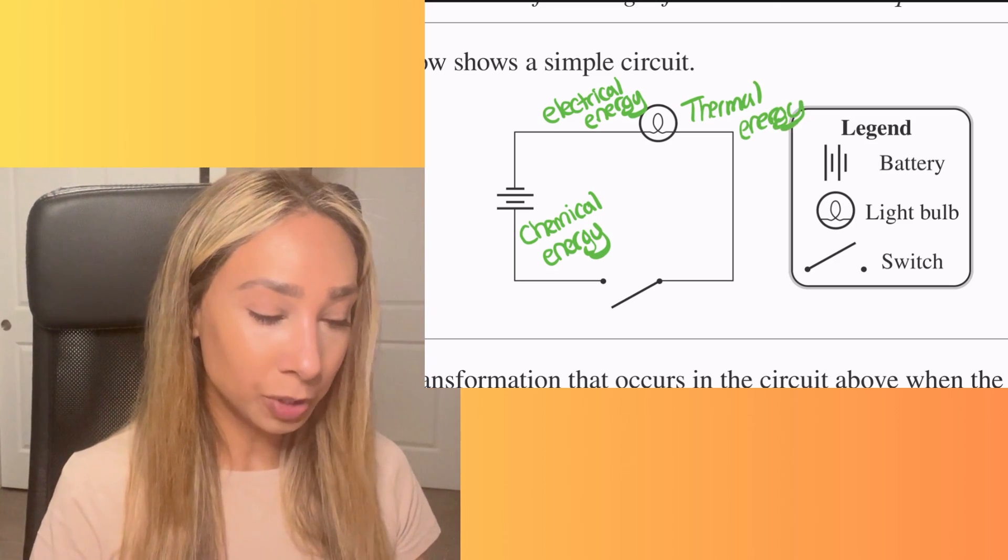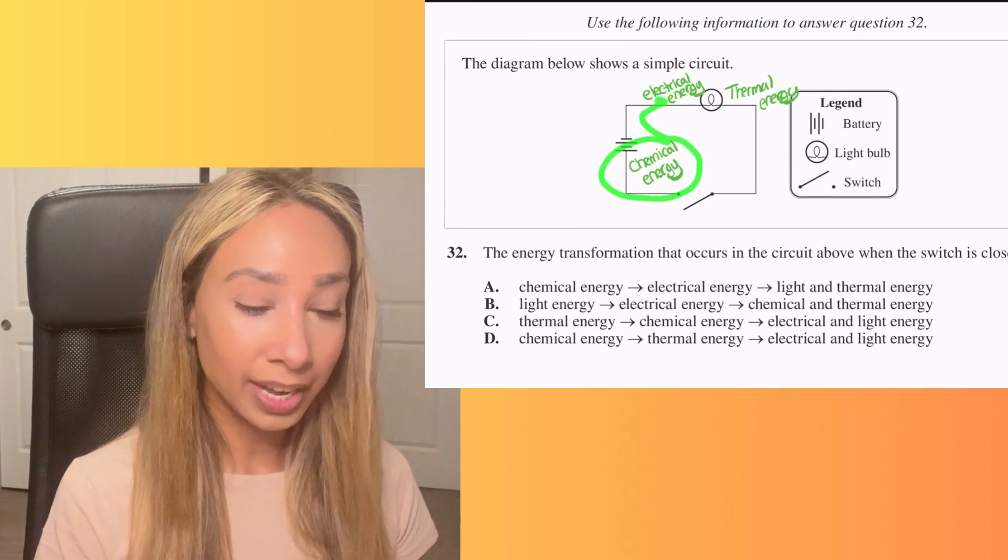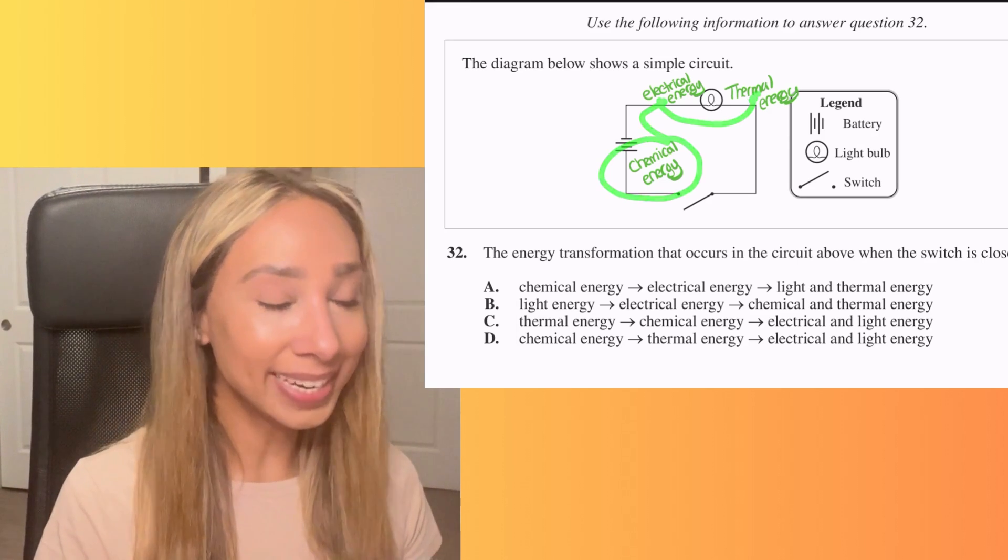So in the case of this example here, as the light bulb gets powered and is working, it's producing thermal energy. So we need to find an option that will look at chemical energy converting to electrical energy, converting that to thermal energy. So the only option that's going to fit this one is going to be option A.